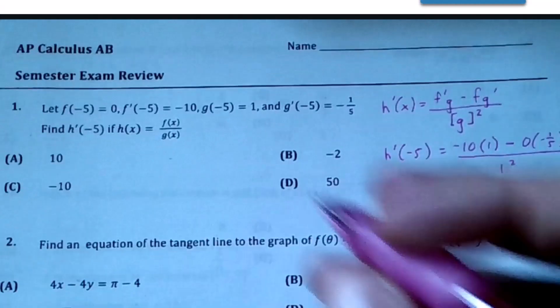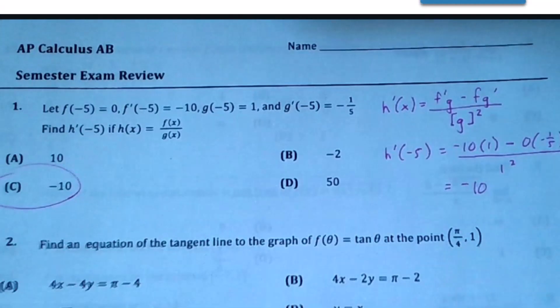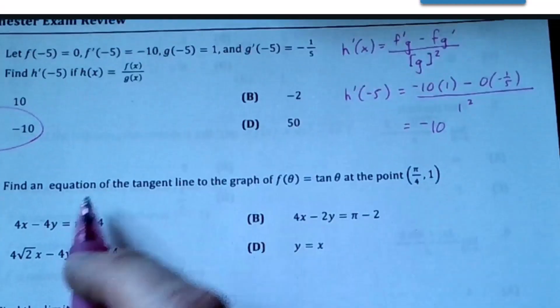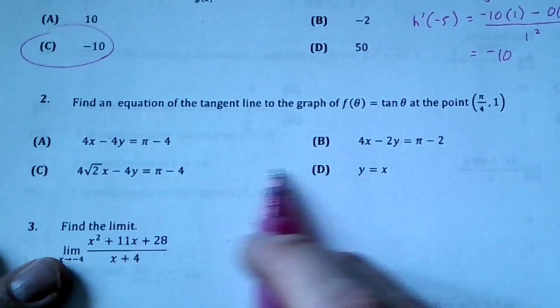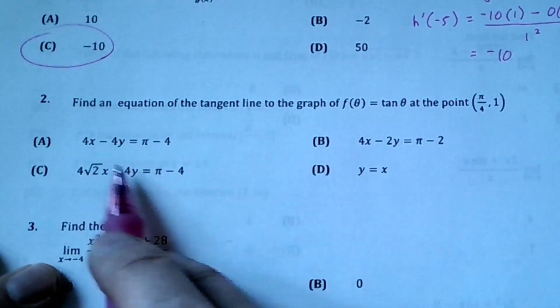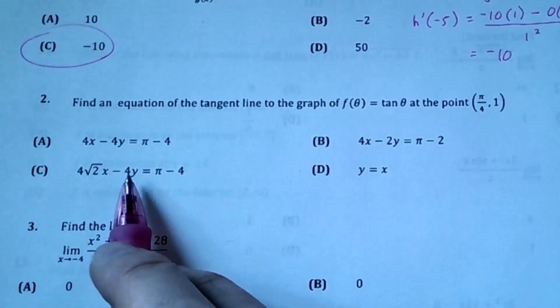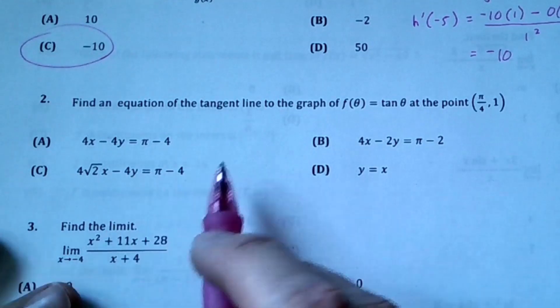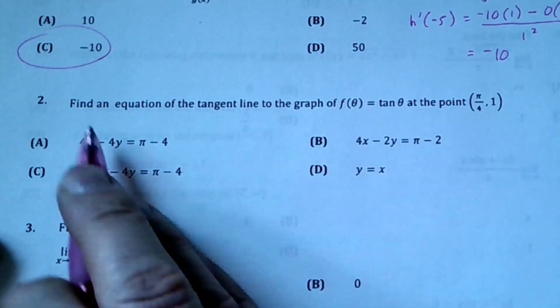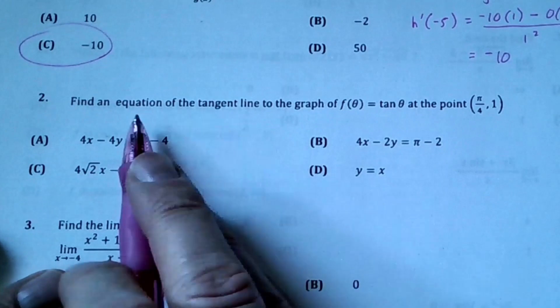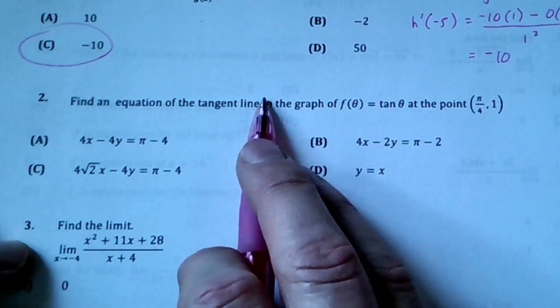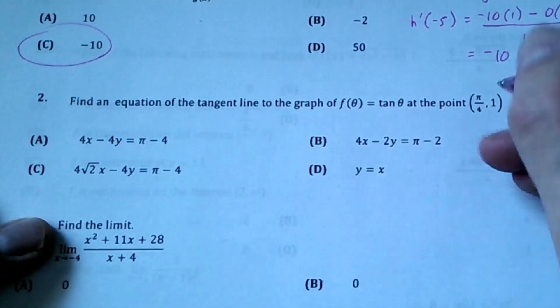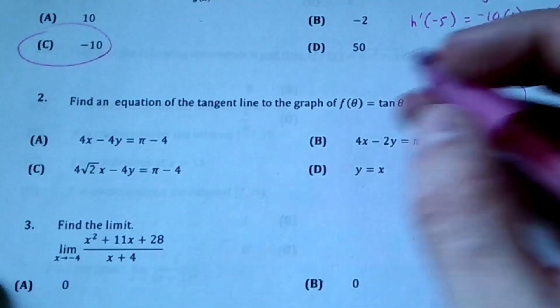Here we're going to find the equation of the tangent line. Sometimes they don't put it in the form you like, so we might have to manipulate it. What we need for an equation of a tangent line is slope and a point. They gave us the point clearly, so what we need is the slope.